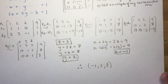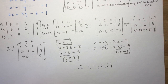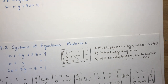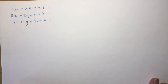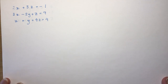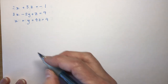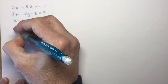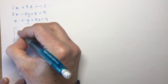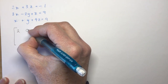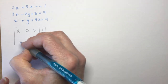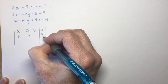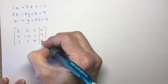Now I'll show another example — you might want to pause and try it yourself, then come back and check. Here are three planes; let's write the augmented matrix. No y term in the first equation, so it gets a zero placeholder. The matrix entries are: 2, 0, 3, minus 1; then 3, minus 2, 1, 9; and 1, 1, 4, 4. There will be many different ways to approach this.